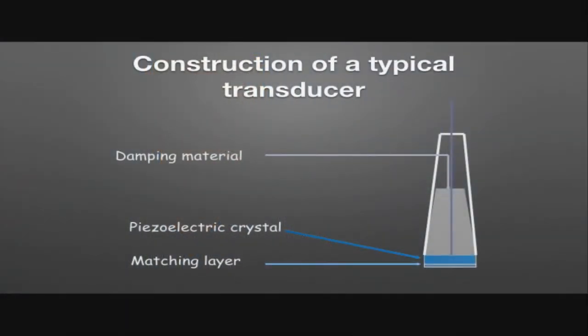These transducers contain crystals which are the source of transmitting and receiving energy. These ultrasound crystals are ground down to a thickness equal to exactly half the wavelength of the desired frequency — that's how these frequencies are made. In terms of the typical transducer, there are three main sections to discuss: the piezoelectric crystal, which has a damping material behind it and a matching layer in front of it.